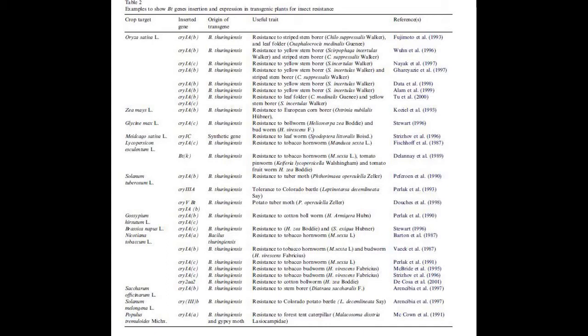On a side note, the first testing of a BT transgenic plant was in 1986 with tobacco, with great success. And in 1996, BT crops such as tomato, corn, and cotton were developed, also successfully. BT cotton and corn are certainly still in use today.